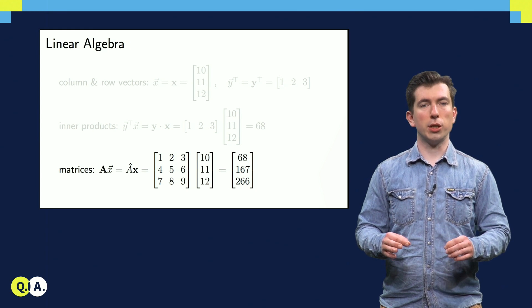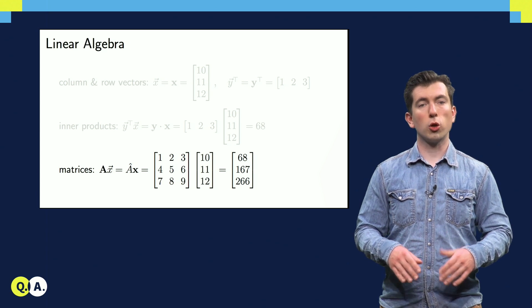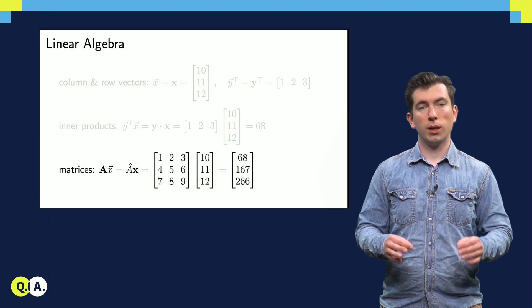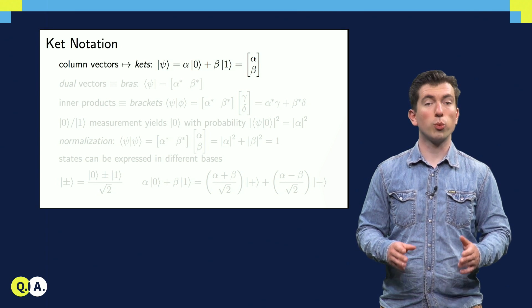There's a slightly different notation that we use for vectors and matrices in quantum computing, which we often call ket notation. In ket notation, a quantum state is expressed using a column vector with complex coefficients.